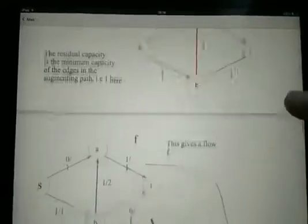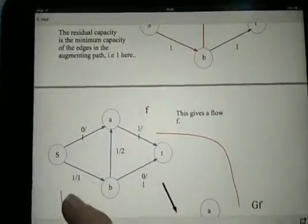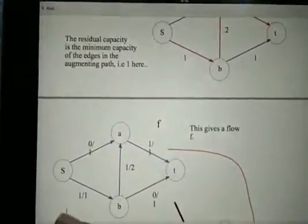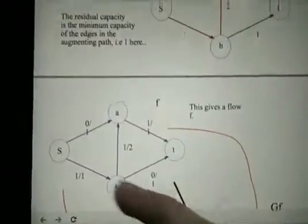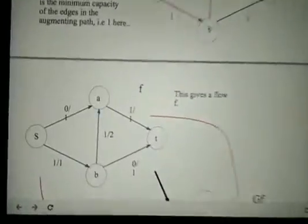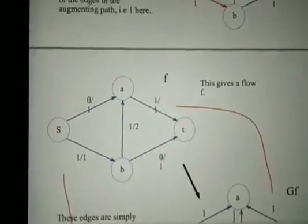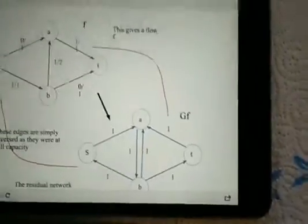With this, you update the flow by adding a flow of 1 on all the edges in the augmenting path, like so. The flow for the other edges is zero. From this network, you now create your residual network again, like so.